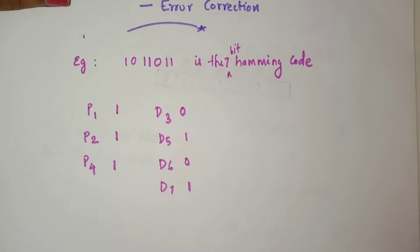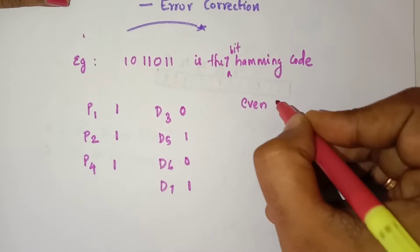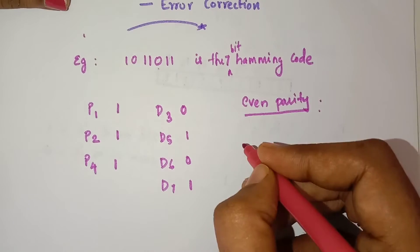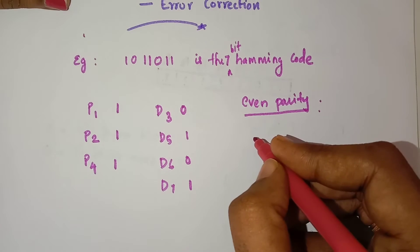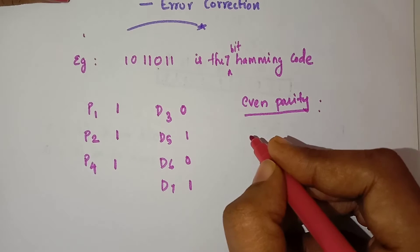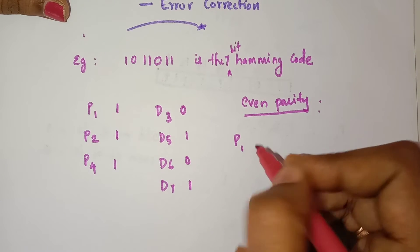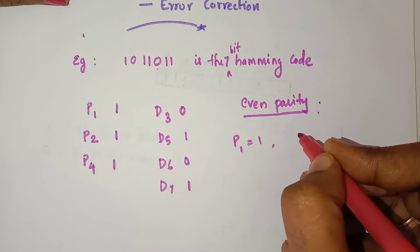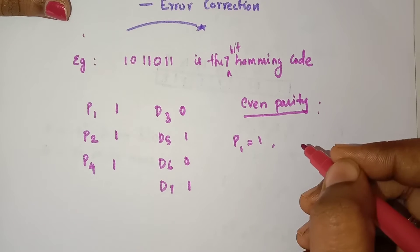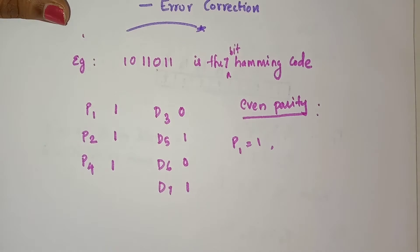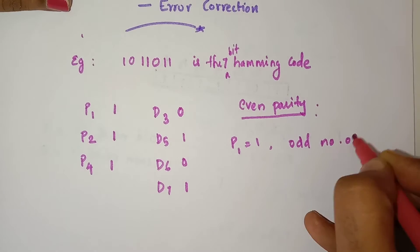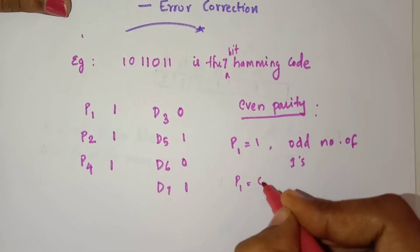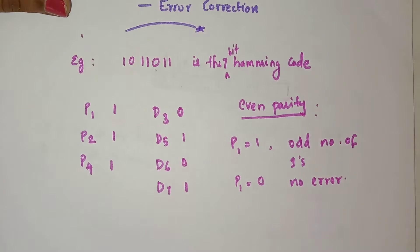On the receiver side, we mainly use the even parity checker. For even parity, if there is an even number of 1s then there is no error. If there is an odd number of 1s then there is an error. For example, if the value of P1 is equal to 1, then the number of bits is odd, that means there is an error.